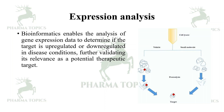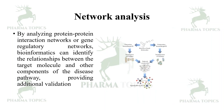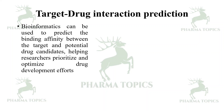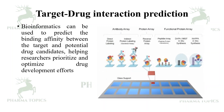Cells can undergo proteolysis to obtain different targets, where small molecules are studied using computational simulation techniques. Network analysis: by analyzing protein-protein interactions or genome-genome interactions and regulatory networks, bioinformatics can identify relationships between target molecules and other components of the disease pathway, providing additional validation. Target-drug interaction prediction: bioinformatics can predict the binding affinity between a target and potential drug candidates, helping researchers prioritize and optimize drug development efforts.